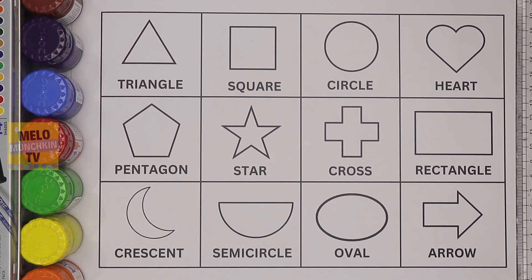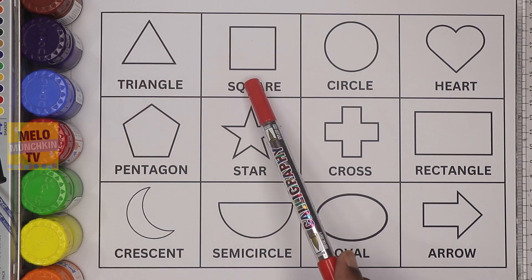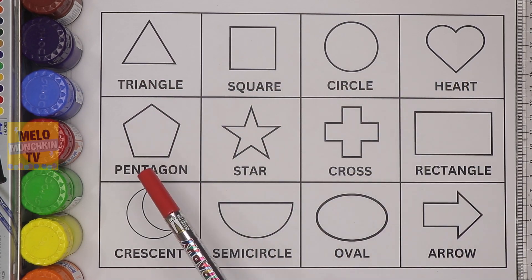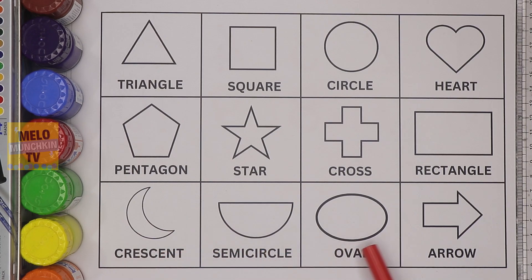Hello kids! Today in this video we are going to learn shapes and colors. How many shapes can you see? There are a total of 12 shapes. Let's count: 1, 2, 3, 4, 5, 6, 7, 8, 9, 10, 11, and 12. So there are 12 shapes, and we are going to learn 12 shapes and 12 different colors.